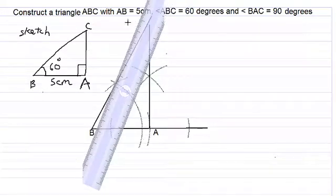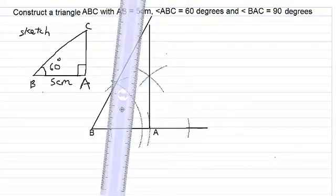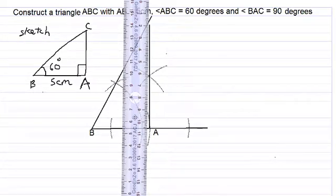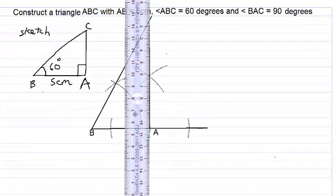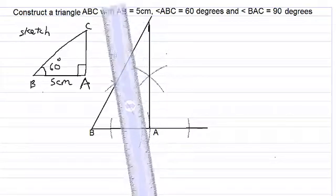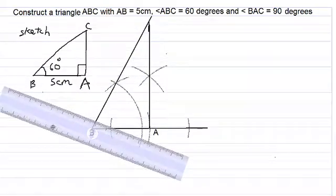Okay, so we carry up this other line coming up from A until it intersects with the line which came from B. We are trying to get point C here. Okay, so where the lines intersect is point C.